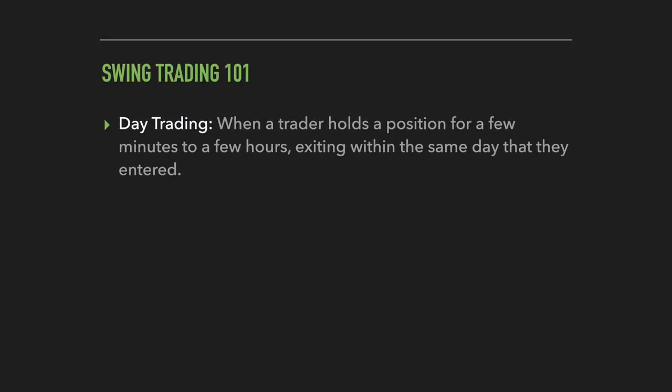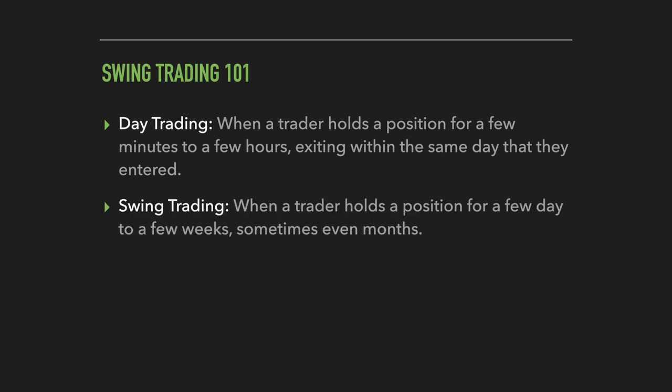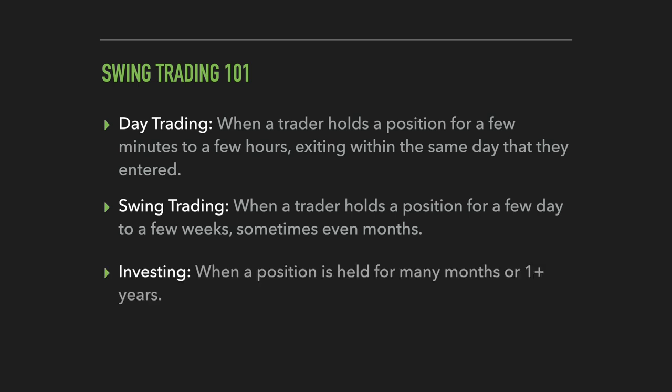We're going to start off with the differences between the types of trades we commonly talk about: day trades, swing trades, and longer-term investments. A day trade is when a trader holds a position anywhere from a few minutes to a few hours, exiting within the same day. Swing trading is when a trader holds a position for typically a few days up to a few weeks, sometimes up to a few months. An investment is typically held for many months or even over a year.